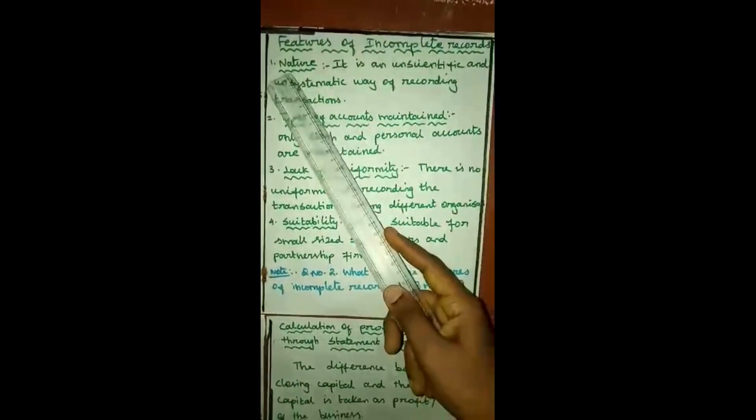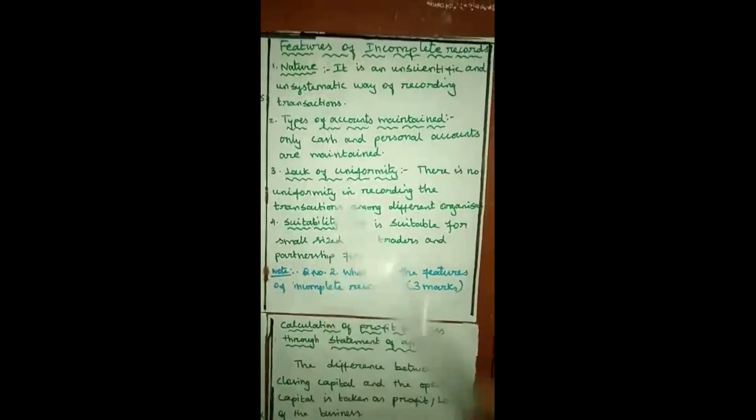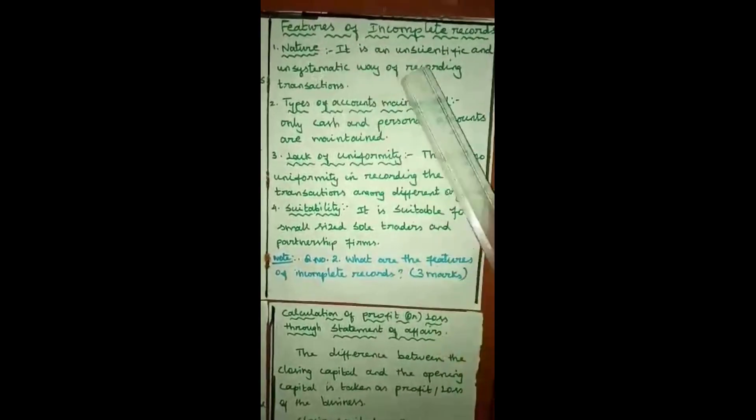Features of incomplete records — that means characteristics. The first point is nature. It is an unscientific and unsystematic way of recording transactions.